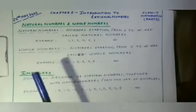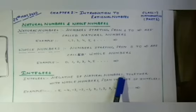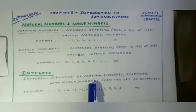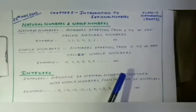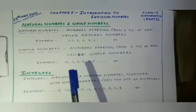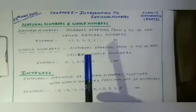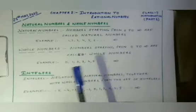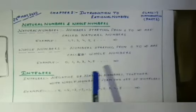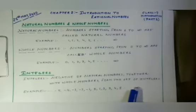Let us come to another topic, that is integers. What are integers? The negative of natural numbers together with whole numbers form the set of integers. The combination of negative natural numbers as well as whole numbers together forms the integers.